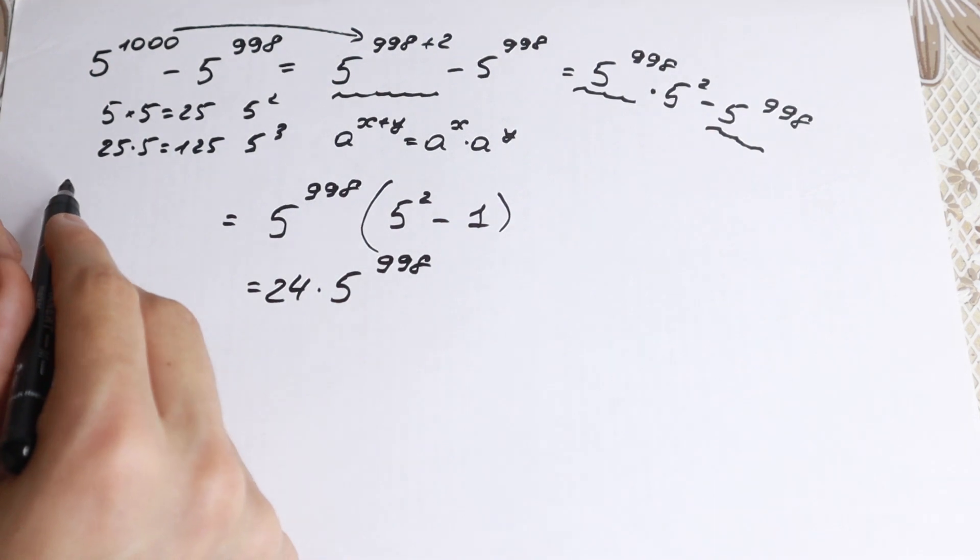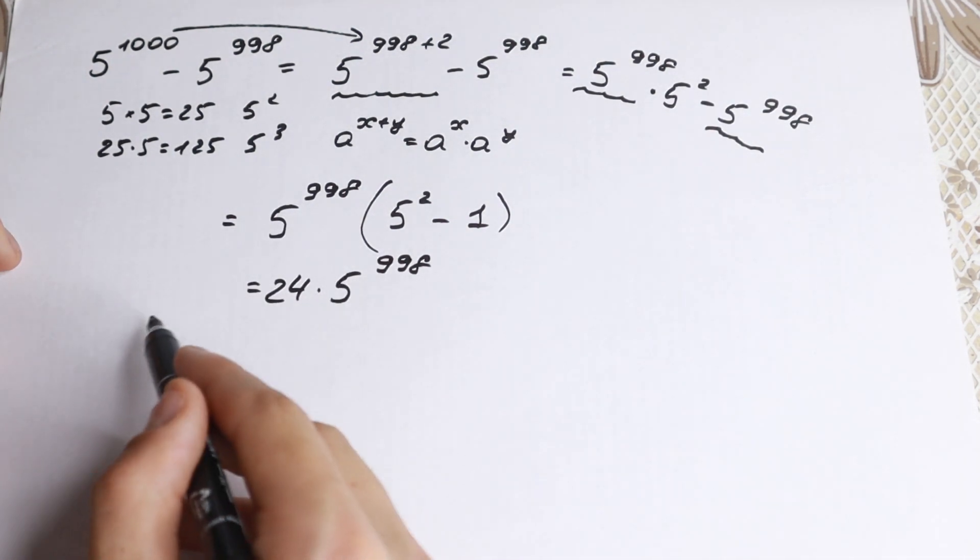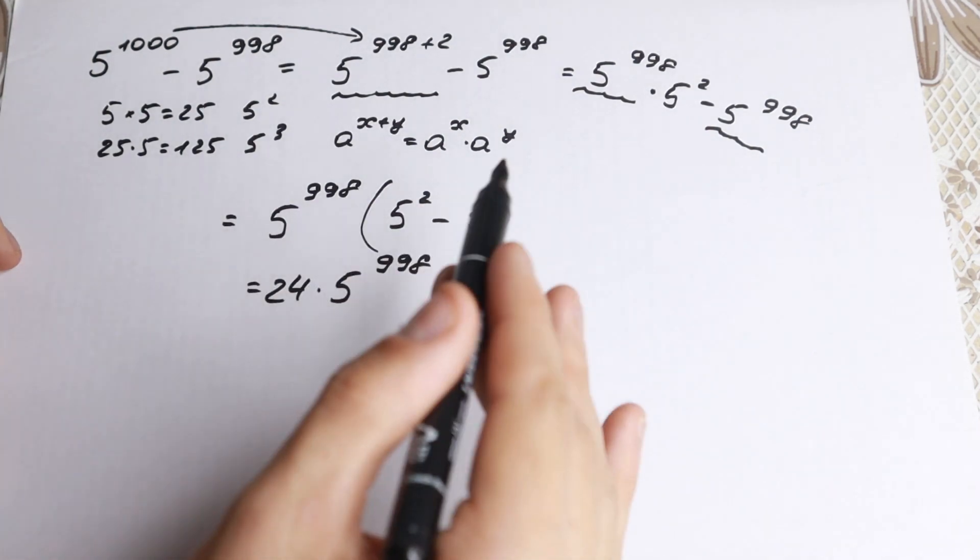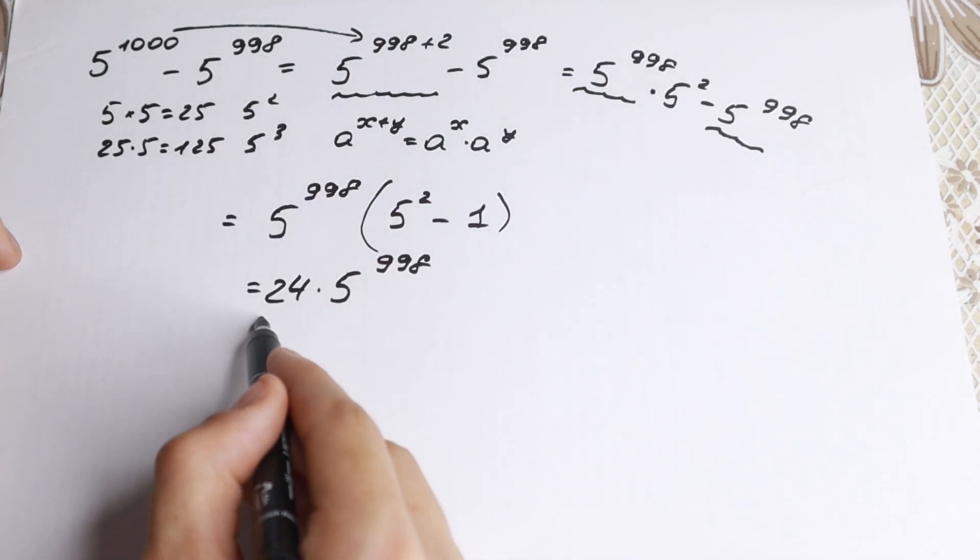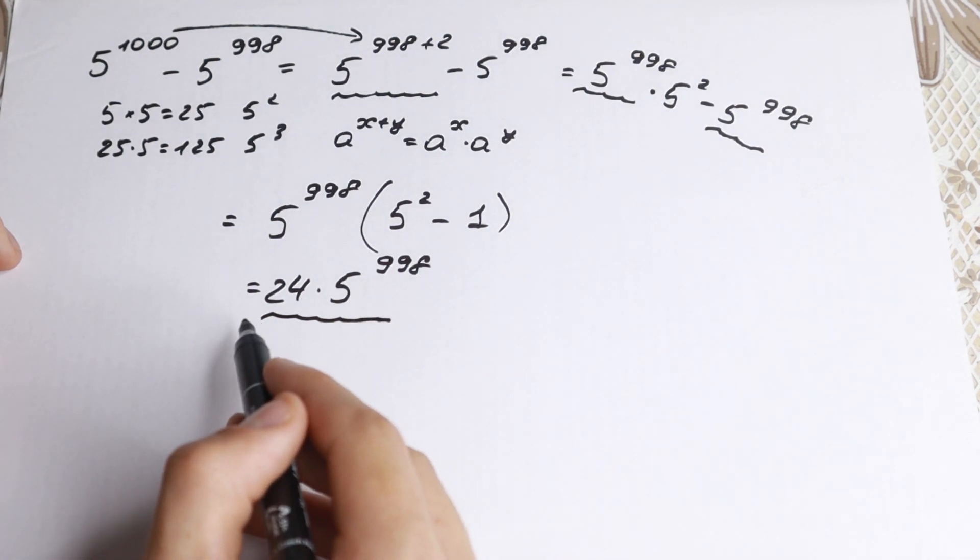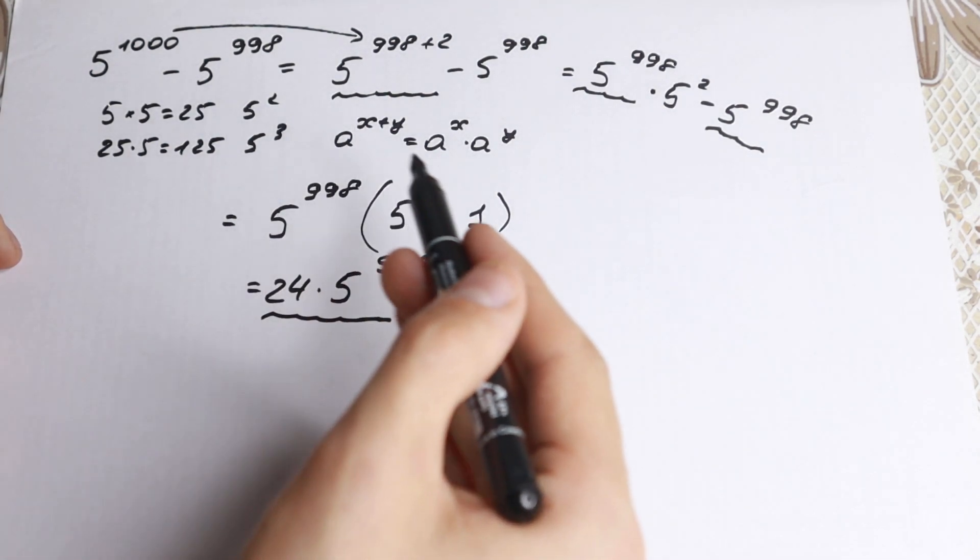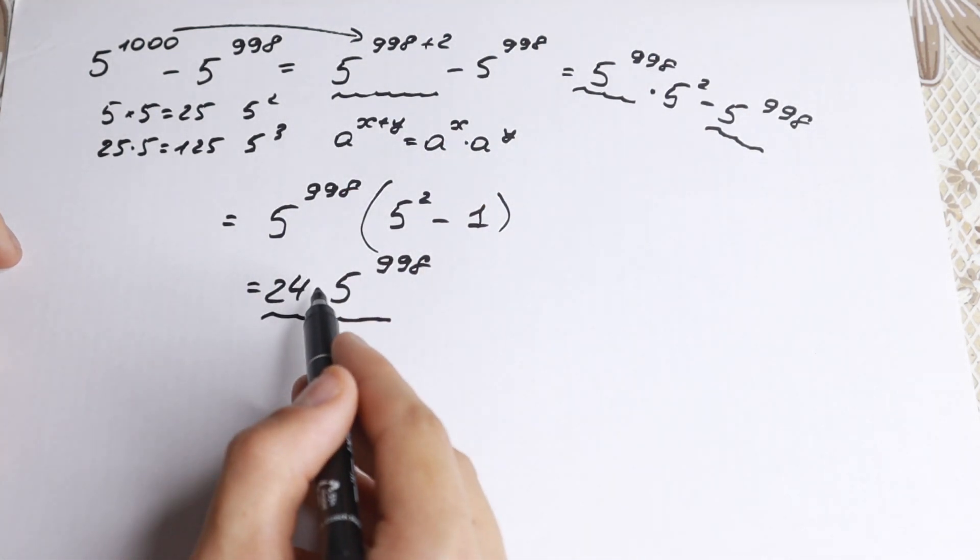If you have this question in your test, you won't have a giant number with 20 or 30 or 100 zeros. You'll have this simplified option: 24 times 5 to the power 998. This is the correct format because you need to practice your power rules.